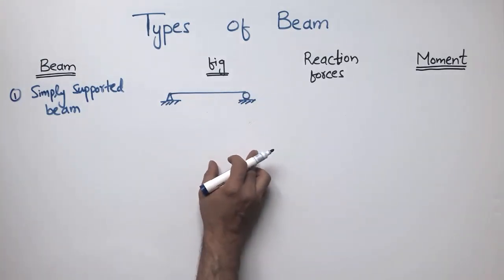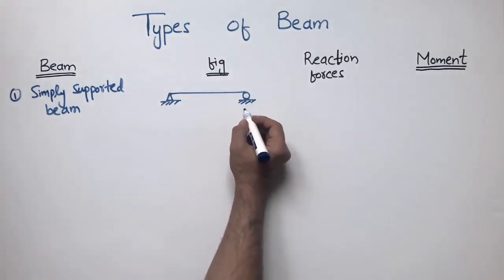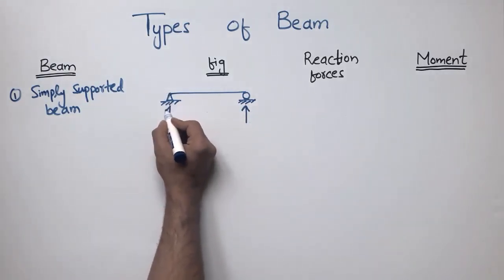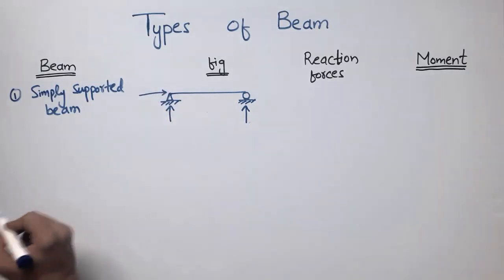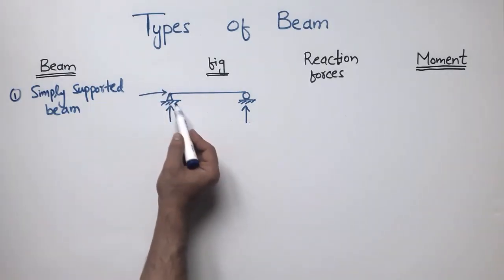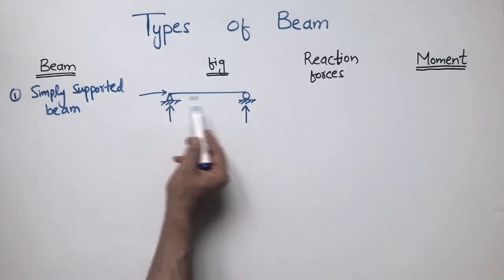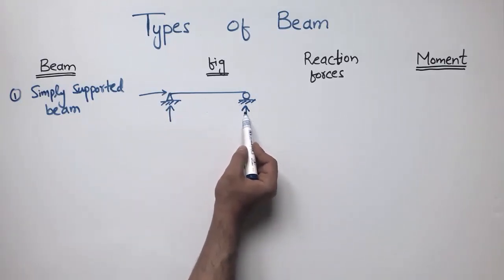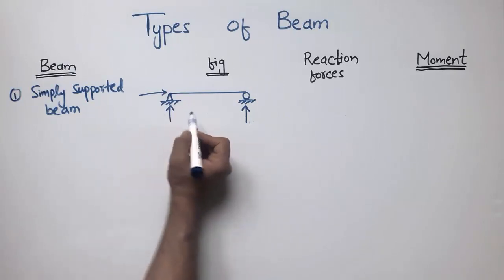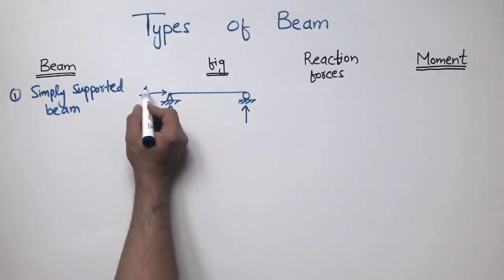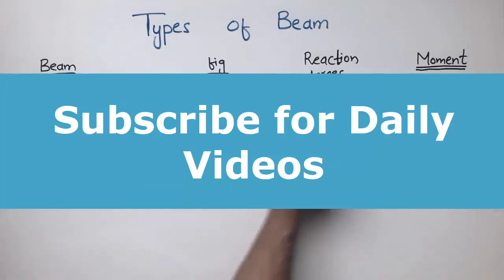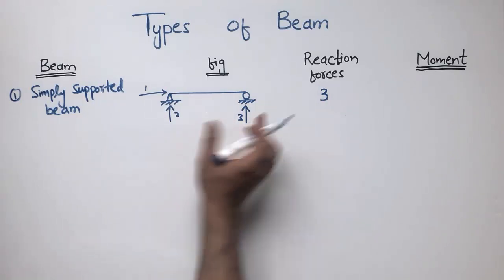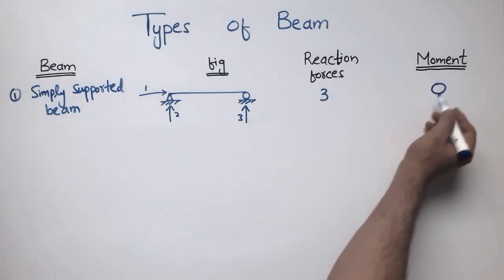You should know which type of support can resist which reaction forces. The roller support can resist only vertical forces, while the hinge support can resist both vertical and horizontal forces. So we have three reaction forces in total. This type of beam cannot resist a moment, so the capacity to resist moment is zero.